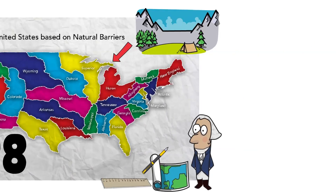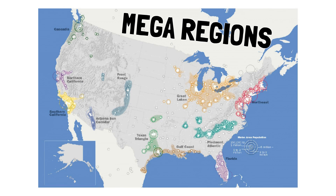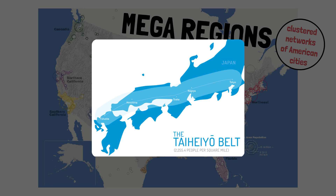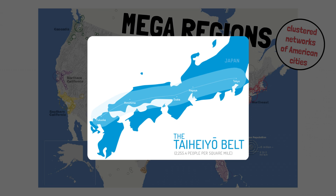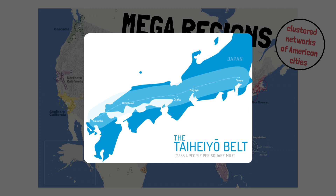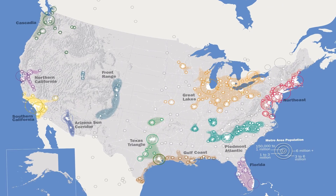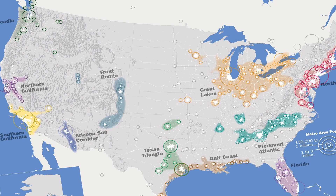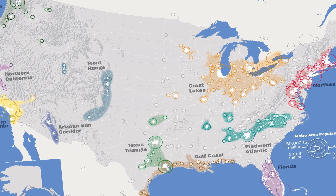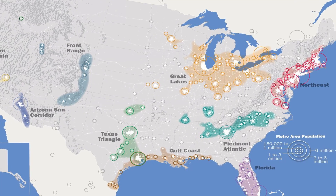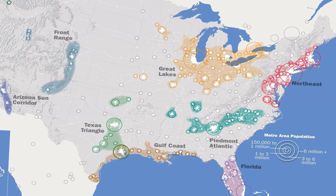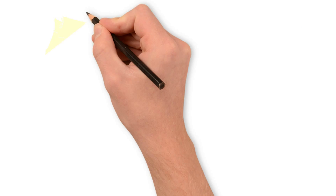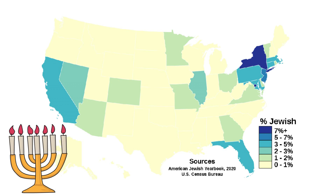The next map is about mega regions. In the U.S., mega regions are cluster networks of cities — urban centers so large they end up connecting with each other, similarly to Japan's Taiyō Belt megalopolis. According to this map there are 11 mega regions in the U.S., estimated to contain a total population of over 237 million people — about two-thirds of the entire country. Some mega regions are so large they're beginning to connect with each other, like the Northeast and Great Lakes regions, and the Texas Triangle and Gulf Coast have already merged.